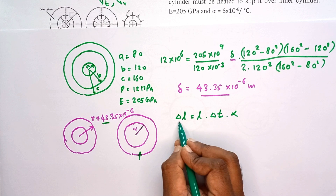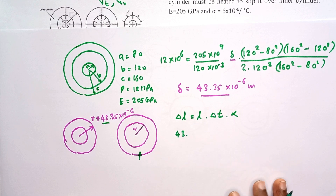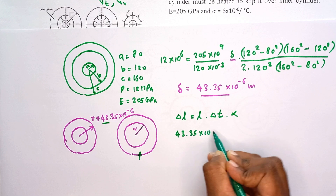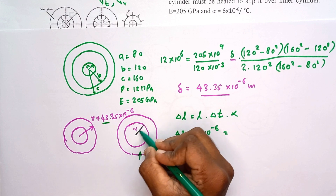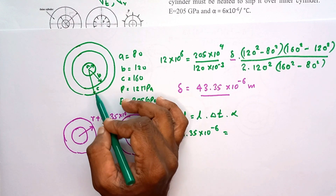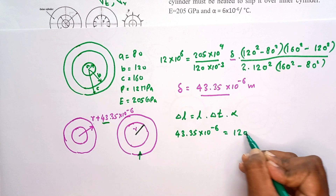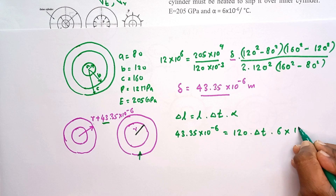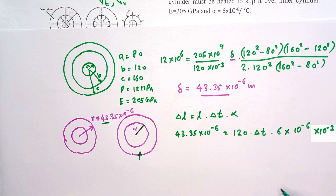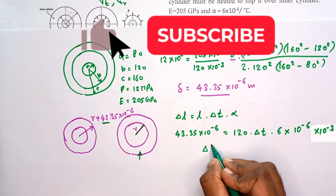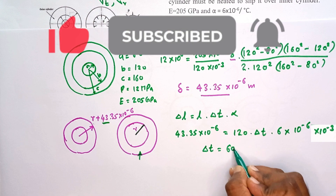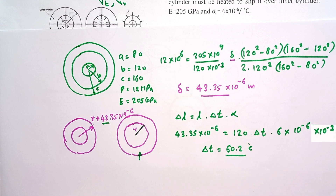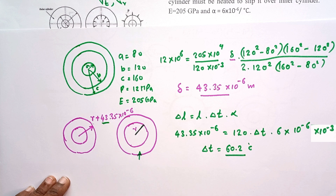The amount of expansion required is 43.35 times 10 to the power of minus 6 meters. The original length L is the interface radius b, which is 120 millimeters converted to meters: 120 times 10 to the power of minus 3. The thermal expansion coefficient alpha is 6 times 10 to the power of minus 6 per degree Celsius. Solving for delta T, we get 60.2 degrees Celsius. The temperature difference required is 60.2 degrees Celsius. If you know the room temperature, you can calculate the required heating temperature for the outer cylinder.